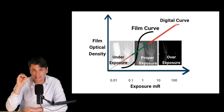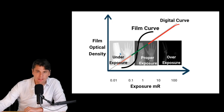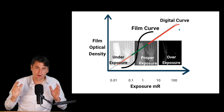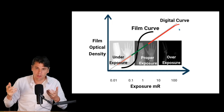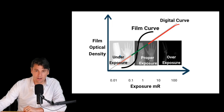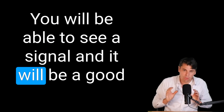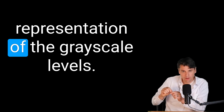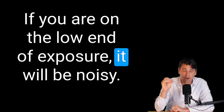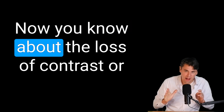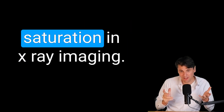With the advent of digital — either CR or DR — there does become an area of saturation eventually, but you're typically well outside the region that you would want to be prescribing clinically. From a clinical imaging perspective, you can think of digital as having a linear behavior: if you give a smaller amount of radiation dose, you will be able to see a signal and it will be a good representation of the grayscale levels. If you are on the low end of exposure, it will be noisy, but it will not be saturated in the same way that film was saturated.